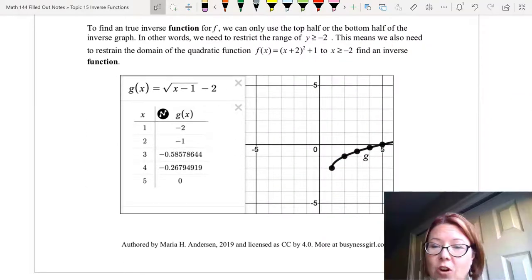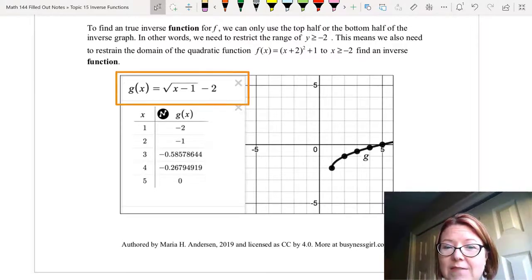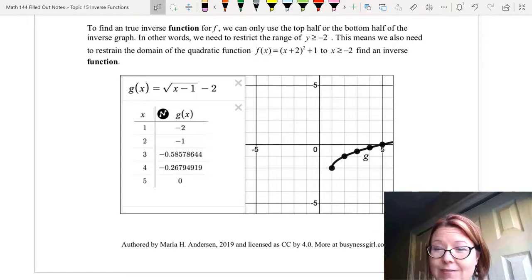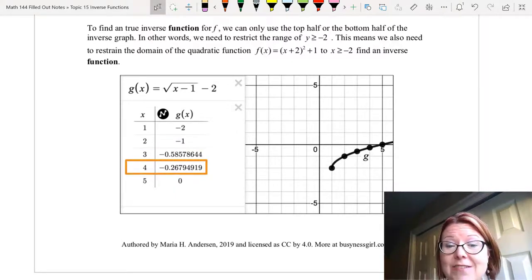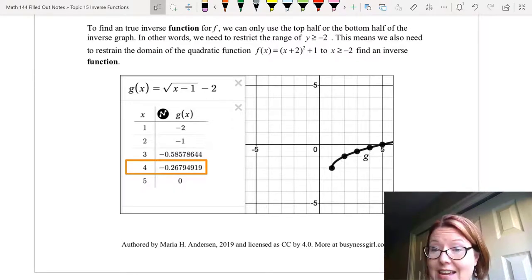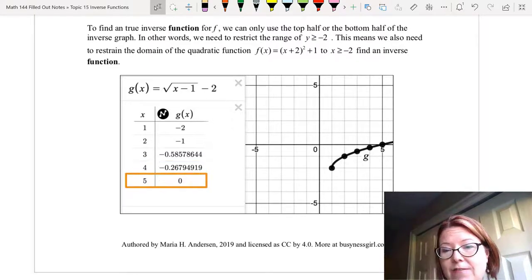I've actually drawn the square root function for you in the graph below. It is g(x) = √(x-1) - 2. We also have a set of points for this: (1, -2), (2, -1), (3, -0.586), (4, -0.268), and (5, 0).